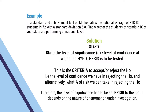Third step: let us decide the level of significance — alpha, or the level of confidence at which the hypothesis is to be tested. This is a very important step in testing the hypothesis. The level of significance is to be set prior to the test. This is the criteria to accept or reject the null hypothesis — that is, the level of confidence we have in rejecting the null hypothesis, and what percentage of risk we can take in rejecting the null hypothesis. The level of significance depends on the nature of phenomena under investigation and the type of the test.